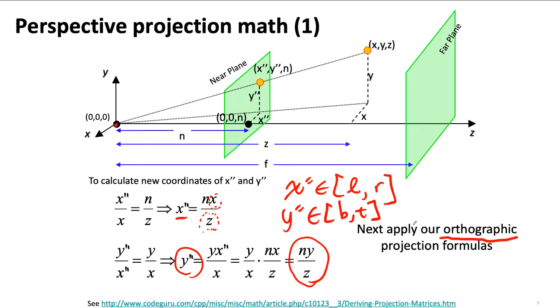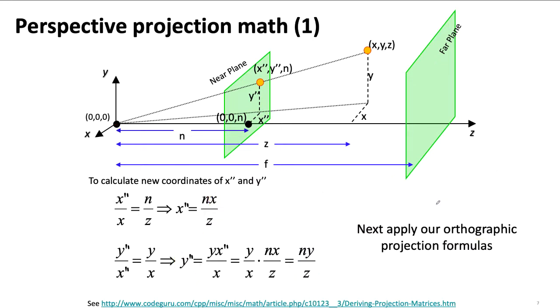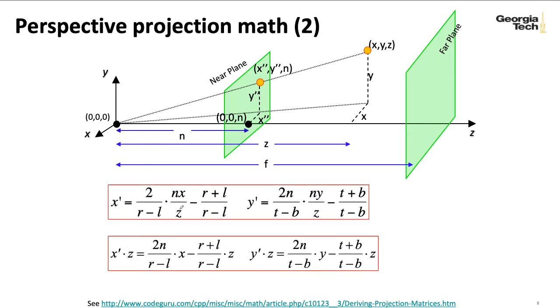we can use the same formulas for orthographic projection that we derived in the last lecture to map these into a minus one to plus one clip space. And so we can do that here. So what we've got here is our X prime, basically.